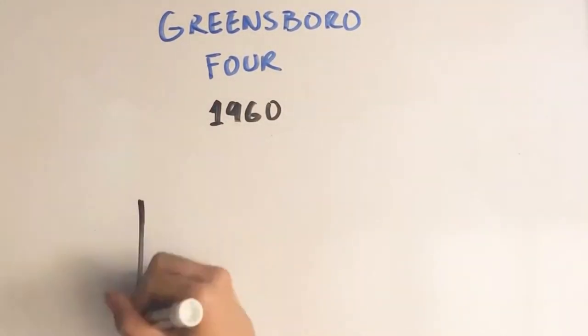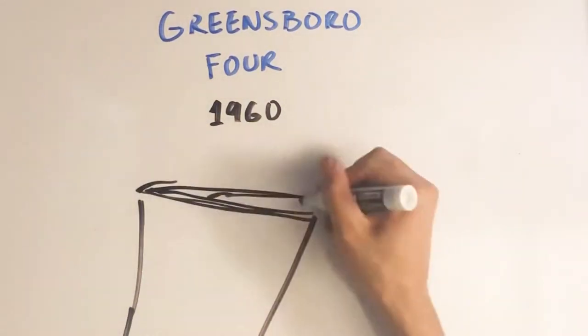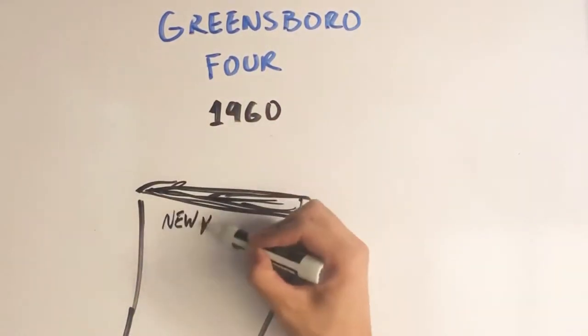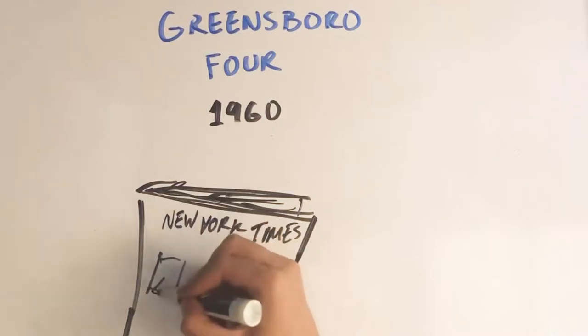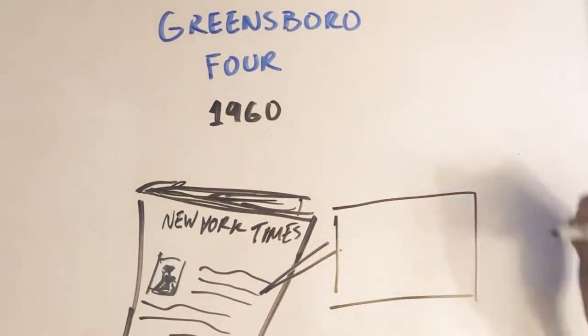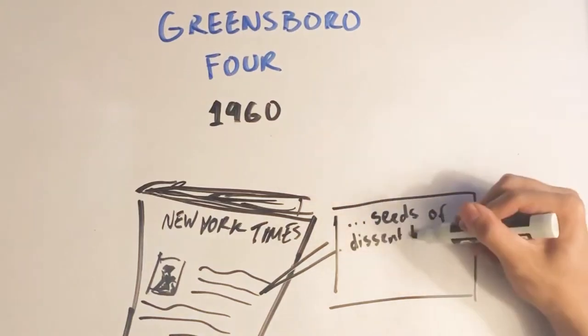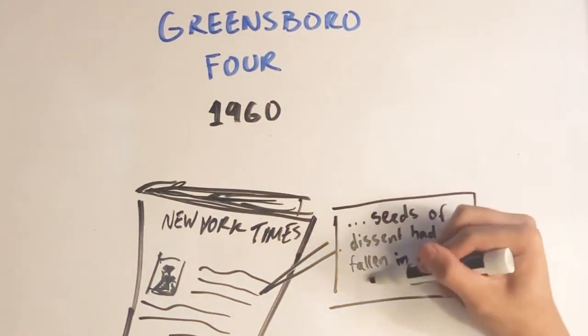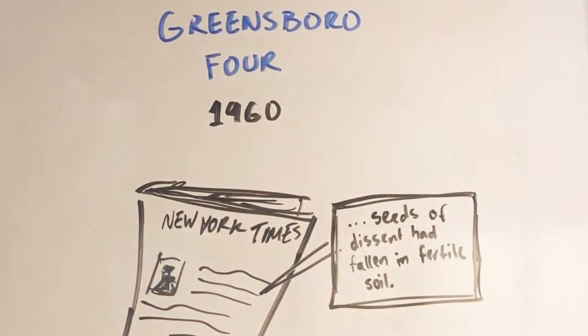A New York Times article discussed the sit-in, saying, the demonstrations were generally dismissed at first as another college fad. This opinion lost adherence, however, as the movement spread. Some whites wrote off the episodes as the work of outside agitators, but even they conceded that the seeds of dissent had fallen in fertile soil.